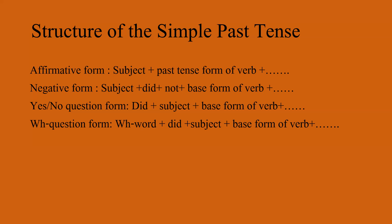The negative form of the simple past tense is used to talk about actions that didn't happen in the past. The structure of the negative form is: subject plus didn't plus base form of verb plus object if any. For example, I didn't watch TV last night. They didn't go to the party.